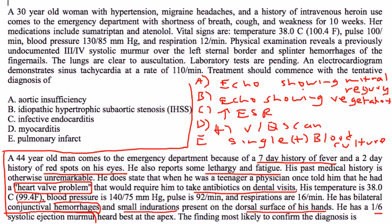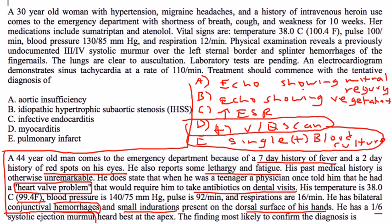Let's go through the answer choices. VQ scan refers to a test to diagnose pulmonary embolism, so that's probably not it. A single blood culture — well if he has endocarditis, all the blood cultures would probably be positive, so probably not E. An elevated ESR will definitely be part of the diagnostic workup, but it's not the test that confirms it. Now you're left with A and B. If you do an echocardiogram and it shows mitral regurgitation, that doesn't confirm endocarditis. You have to actually do an echocardiogram and see vegetations or some sort of mass on the valve — that will confirm that this patient has a bacteria that has infected the heart valve. So the answer is B: an echocardiogram showing vegetations.